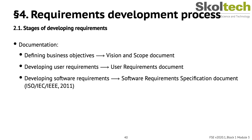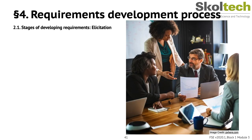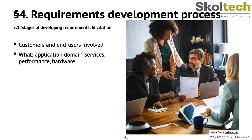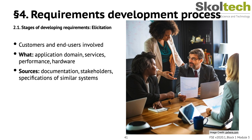The software requirements specification has an IEEE-approved format and is an official statement of what system developers should implement. It should include both user requirements for the system and a detailed specification of system requirements. After an initial feasibility study, the next stage is requirements elicitation and analysis, where software engineers work with customers and end users to find out about the application domain, what services the system should provide, required performance, hardware constraints, and so on. Sources of information include documentation, system stakeholders, and specifications of similar systems.